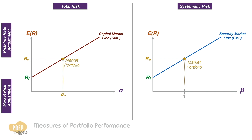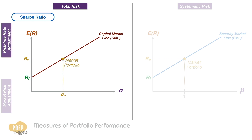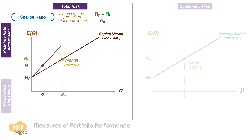The Sharpe Ratio is a risk-free rate adjusted measure based on total risk. It is defined as the excess returns per unit of total portfolio risk, calculated as the portfolio return minus the risk-free rate divided by the standard deviation of the portfolio. We can illustrate the Sharpe Ratio of a portfolio as the slope of its Capital Allocation Line.